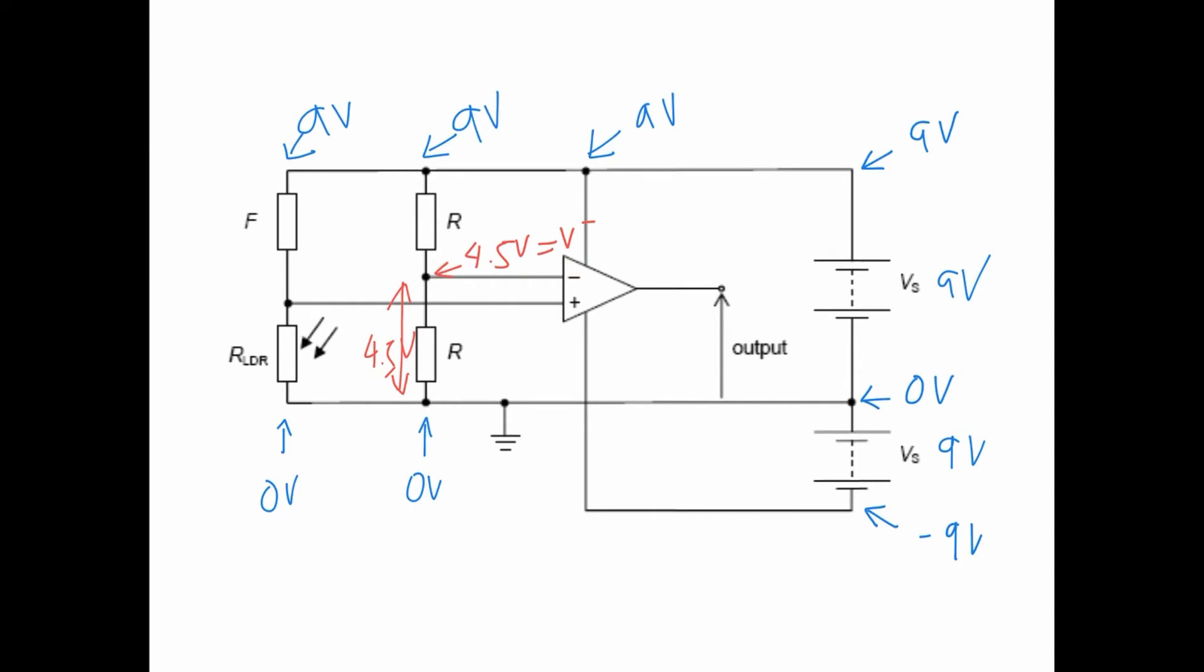Now, the second potential divider made out of another resistor F and a LDR. So let me show you what happens. What is the typical resistance of a LDR? Between, let's say, 1 ohm to 100,000 ohms. And when is it 1 ohm? When it's light, bright. And when it's 100,000? Dark.